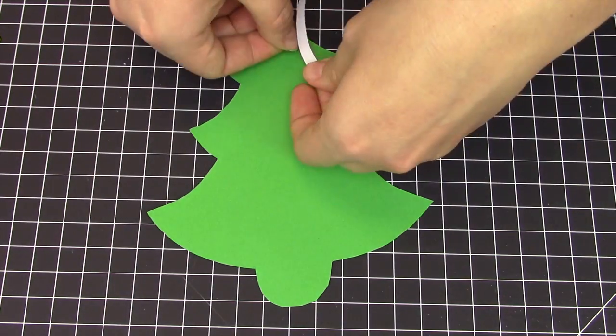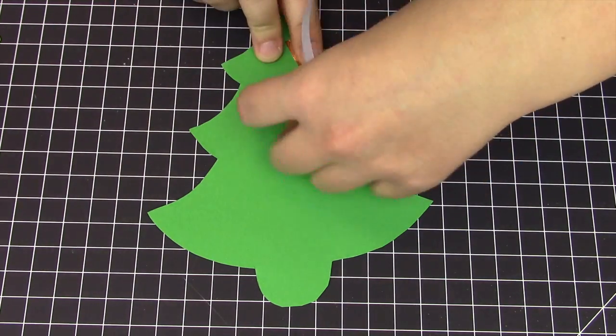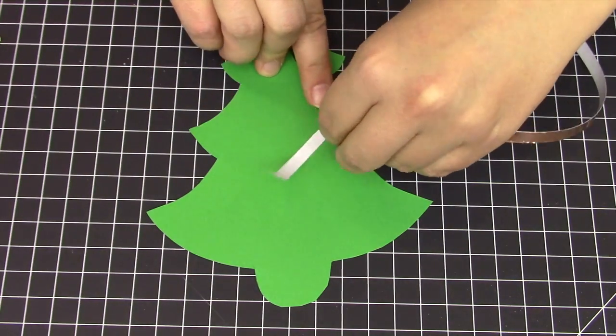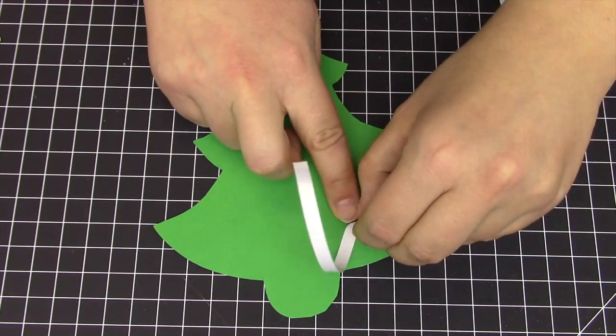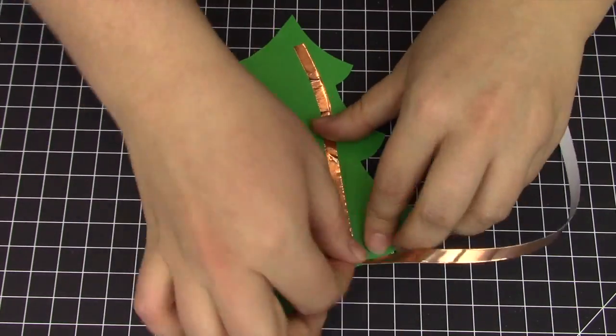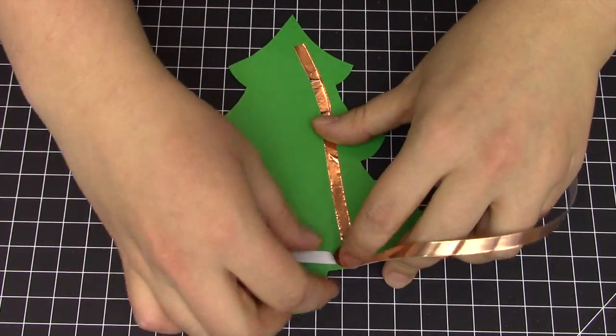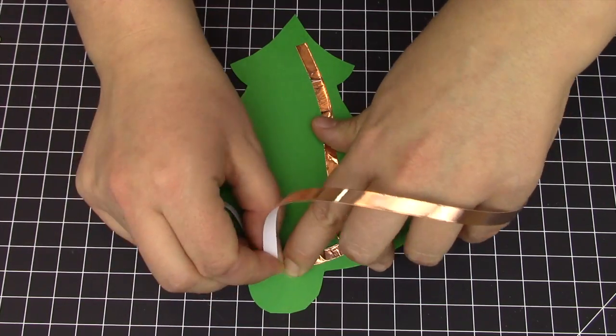Next, we will add the conductive tape. Run one strip of conductive tape along the right side of your tree, making a bend at the bottom, and then run it directly to the center of the battery tab on the bottom.